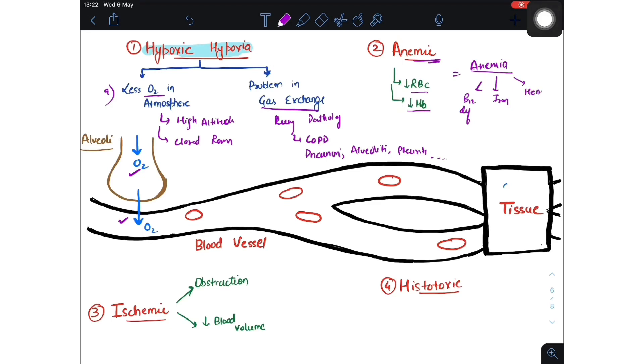The third one is ischemic hypoxia. In ischemic hypoxia, if there is any obstruction here, this RBC will not be able to cross this area, and this will cause decrease in O2 in tissue, causing hypoxia.